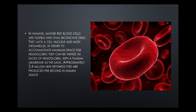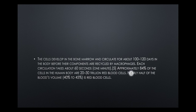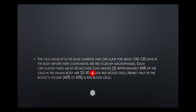In humans, mature red blood cells are flexible oval biconcave discs that lack a cell nucleus and most organelles in order to accommodate maximum space for hemoglobin — they can be viewed as sacks of hemoglobin with a plasma membrane as the sac. Approximately 2.4 million new erythrocytes are produced per second in the human adult. The cells develop in the bone marrow and circulate for about 100 days before their components are recycled by macrophages. Each circulation takes about 60 seconds. 84% of the cells in the human body are the 30 trillion red blood cells, and nearly half the blood's volume — 45% — is composed of red blood cells.